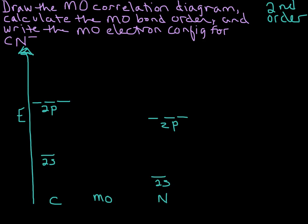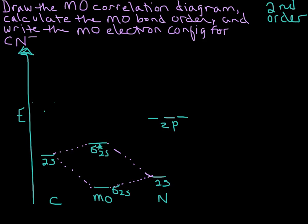Let's go ahead and write in our MO's, starting at the bottom. This is going to be the sigma bonding 2s. Remember that the more electronegative element contributes more to the bonding MO, so it's closer in energy. I'll put a dotted line here showing this correlation, and the less electronegative element contributes less to the bonding but more to the anti-bonding. So I'm going to put that anti-bonding MO much closer in energy to carbon's 2s orbital — this is sigma star 2s.